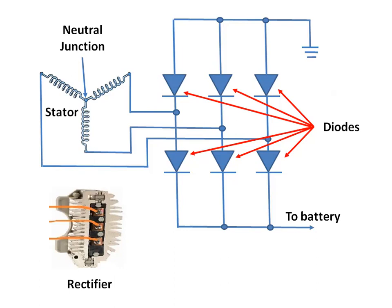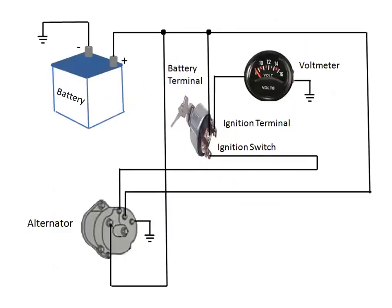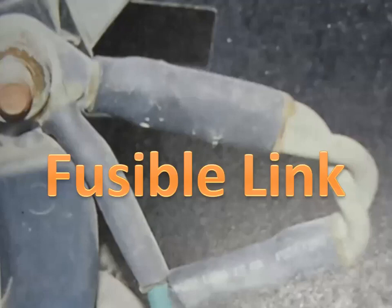A rectifier assembly containing six diodes is mounted on a heat sink in the slip ring end of the alternator. Three of these diodes are mounted on an insulated plate that is connected to the alternator battery terminal, and the other three diodes are mounted on the side that is grounded to the end frame. The ends of the stator windings are connected to the diodes. The alternator battery terminal is connected through a 12-gauge wire to the positive battery terminal, so battery voltage is available at the alternator battery terminal with the ignition switch off. A fusible link is usually connected in this wire to protect it if accidentally shorted to ground.